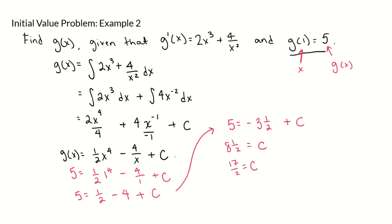So that means that our function g of x written completely will be g of x equals 1 half x to the fourth minus 4 over x plus 17 over 2.